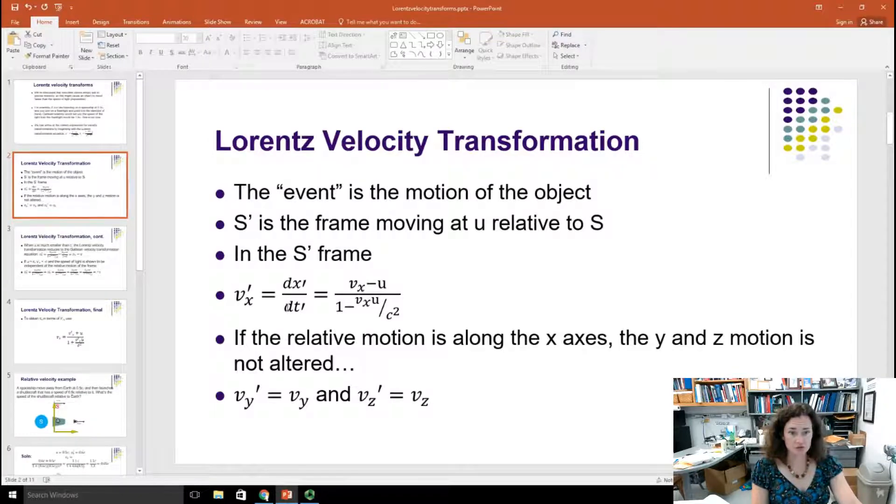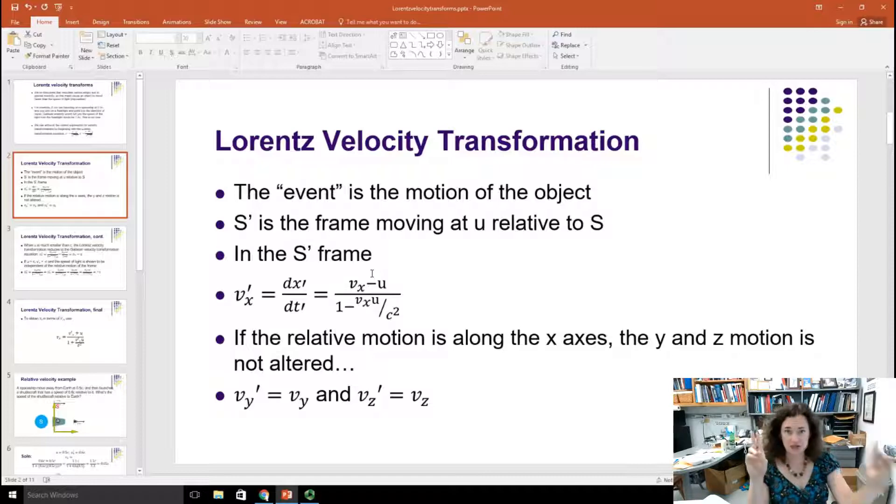For example, you might use this form of the Lorentz velocity transformation equations to measure the speed of a car traveling on the surface of the earth, the stationary frame, from a spaceship that's looking down on that motion. So this would be a perfect example of when you would use this form of the equation.